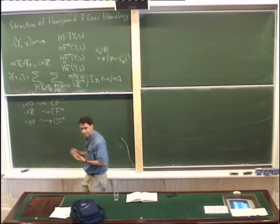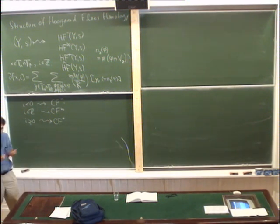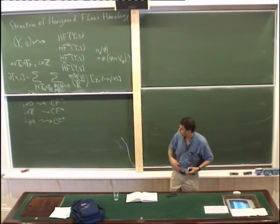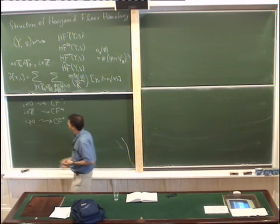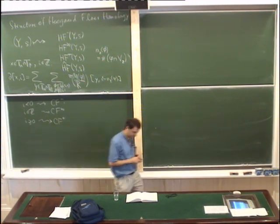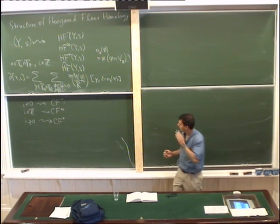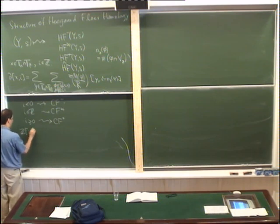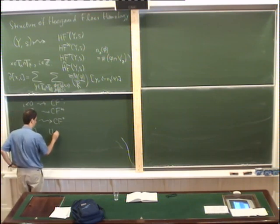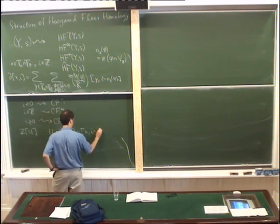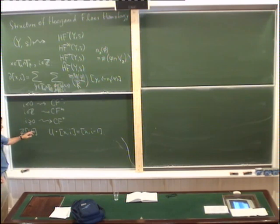As Zoltan said, when the first Betti number of the 3-manifold is positive, we have to use special types of Heegaard diagrams. But if Y is an integer homology sphere, we don't need any extra hypotheses, and we get these three groups. All of these groups are equipped with an action by a polynomial algebra in a single two-dimensional variable, which sends X_I to X_{I-1}, and this decreases grading by 2. So all of these groups are Z[U]-modules.